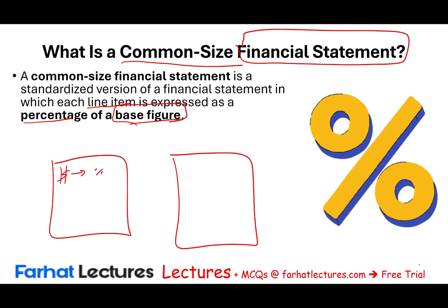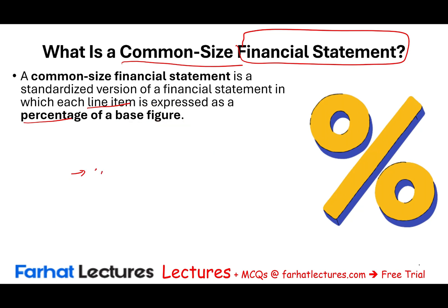We compare everything to revenue. On the balance sheet, we would select a figure — for example, total assets — and compare everything to assets to figure out what they represent as a percentage of assets. Why do we do that? What's the main purpose of this?